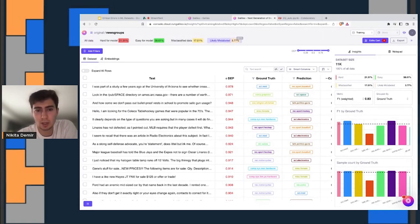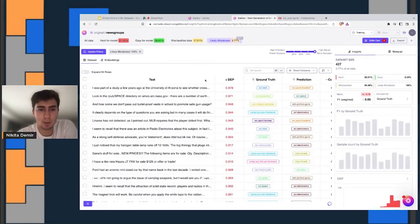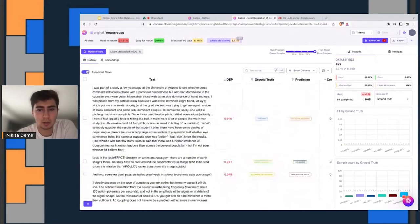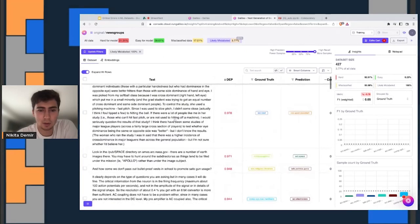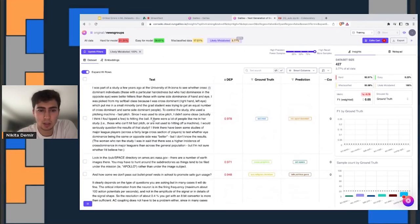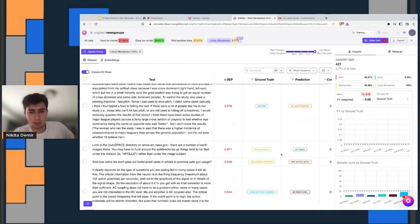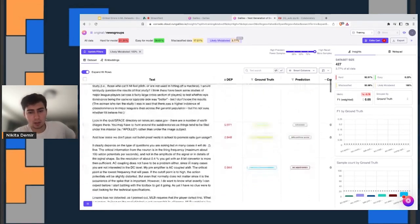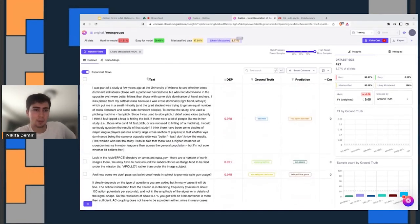Some of the data errors we provide out of the box, for example, is this likely mislabeled tab. You'll see that a lot of these are, for example, this one on the left talks about baseball and the ground truth was like medicine, but the prediction and what the model is suggesting is that it should be baseball. Similarly, down here, should be space. This one talks about guns, etc.